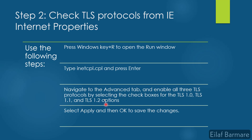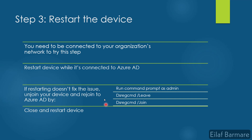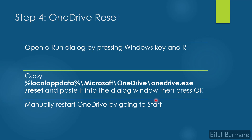If that doesn't fix the issue, we move to step three. Make sure your device is connected to your organization's network and is also joined to Azure AD. Restart the device. If that doesn't fix the issue, unjoin your device and rejoin Azure AD using the two commands provided in a command prompt window. Once done, restart the device again. When it loads up, it's good practice to perform a OneDrive reset — paste the provided command into the Run box and restart OneDrive. Once we try all these steps, it should hopefully resolve your issue. It has resolved almost 80% of the client issues I worked with.